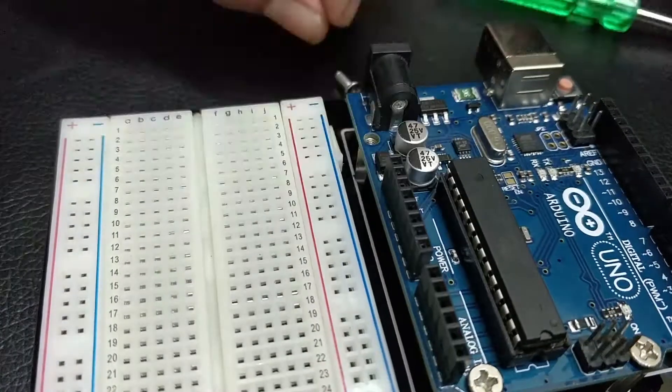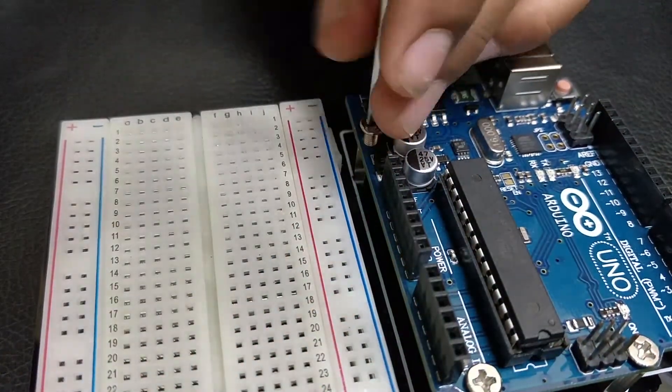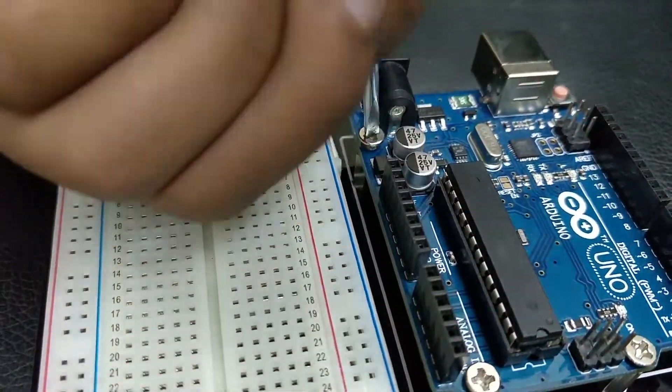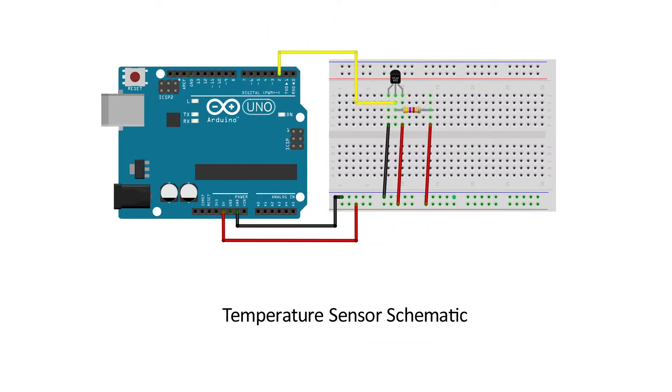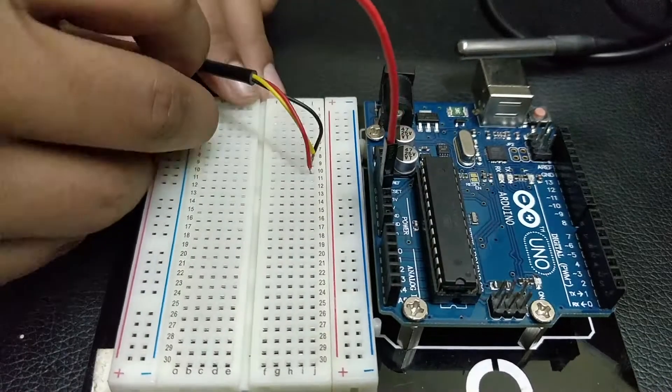I am using a base plate to hold the breadboard and Arduino firmly in place. I am showing you the schematics of the entire setup. This is my first Arduino drawing. Let us see how to connect the different hardware and the sensor.